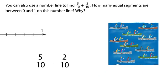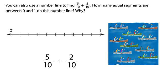You can also use a number line to find five-tenths plus two-tenths. How many equal segments are between zero and one on this number line? Why?